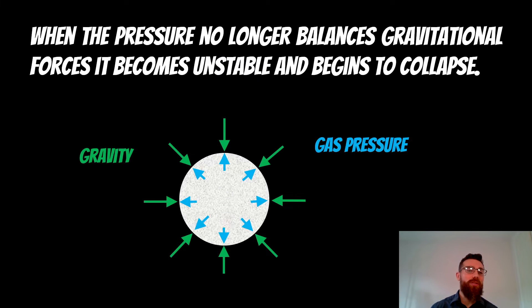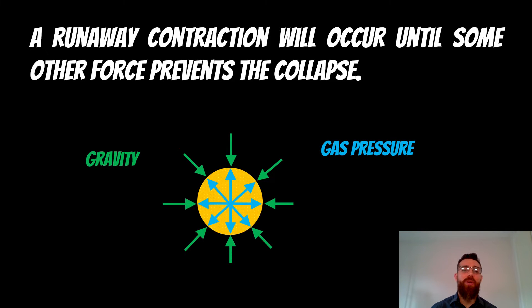At some point, the pressure may no longer balance that gravitational force trying to collapse it. It becomes unstable and begins to collapse. That gravitational force overcomes the gas pressure and it starts to collapse. That typically would be a runaway contraction. It will continue to collapse until some other force prevents that collapse.